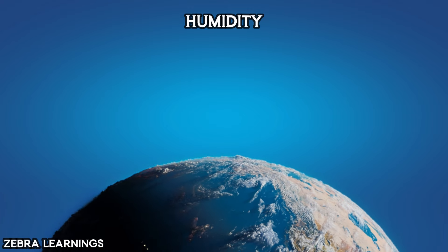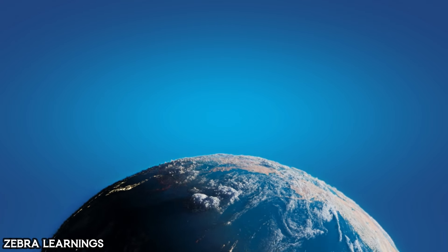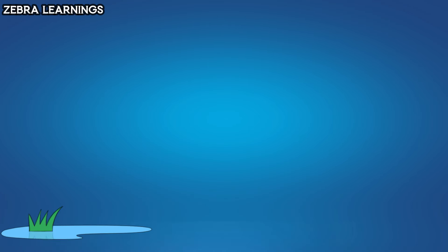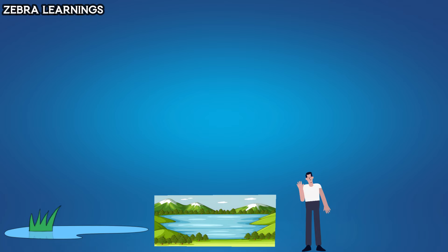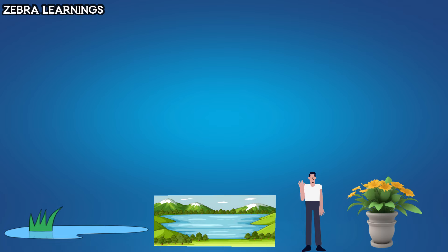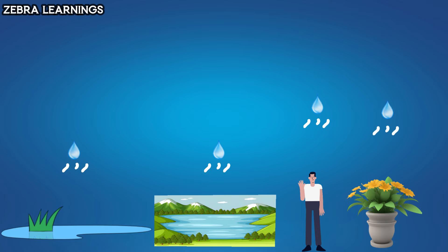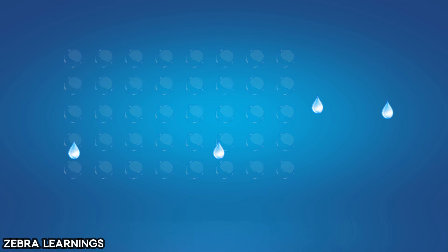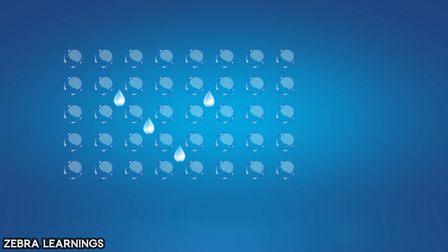In our atmosphere, water from various sources like ponds, lakes, living beings, and plants evaporates and turns into water vapor. This water vapor mixes with the air, and the mixed water vapor is what we call humidity.